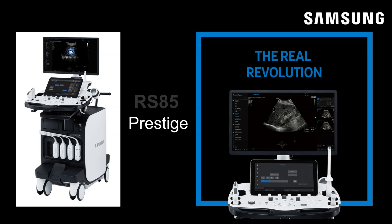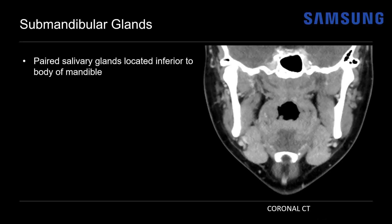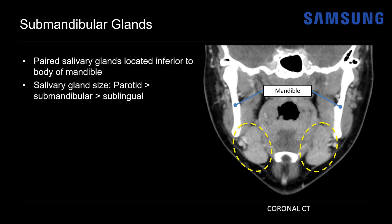I'm going to show you the ultrasound appearance of submandibular sialolithiasis and review the details of floor of mouth anatomy. The submandibular glands are paired salivary glands located inferior to the body of the mandible. Here on a coronal CT scan we can see the mandible and just below that the paired submandibular glands. The largest salivary glands are the parotid glands, followed by the submandibular glands, which are larger than the sublingual glands.